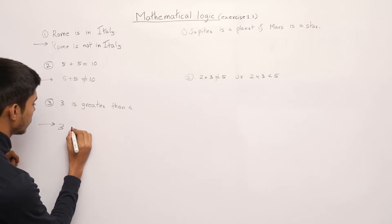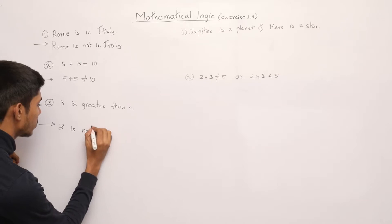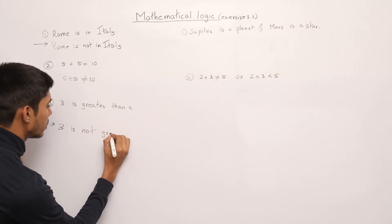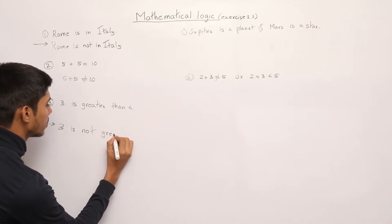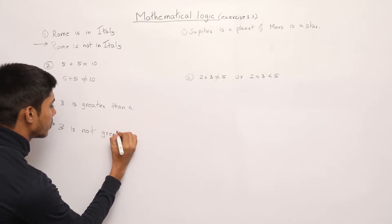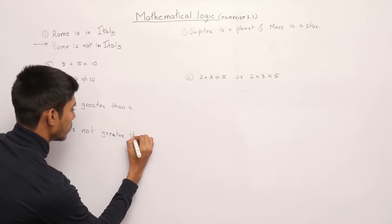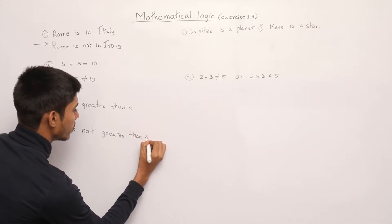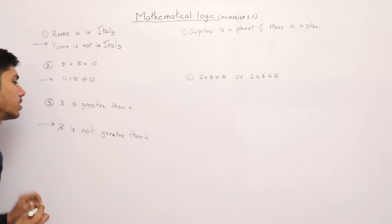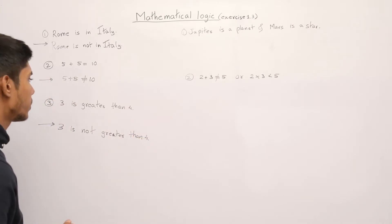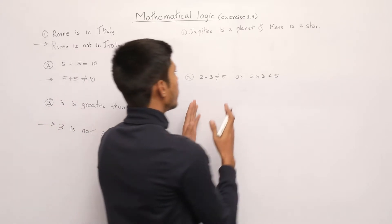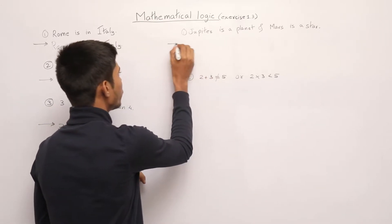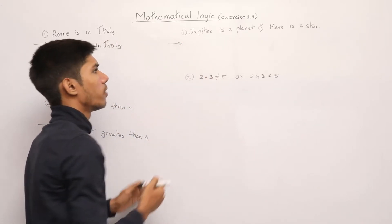The third statement is '3 is greater than 4', so the negation will be '3 is not greater than 4'. In these statements we now have to write the truth values.